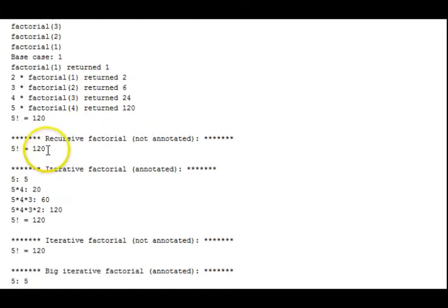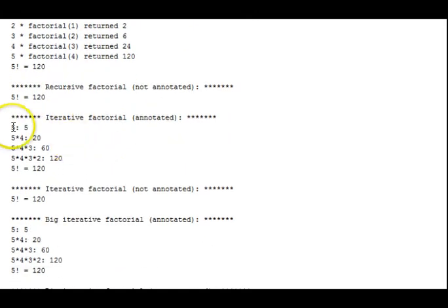Here's the non-annotated result. The iterative result, 5, 5 times 4, 5 times 4 times 3, 5, 4, 3, 2. You can see this is fundamentally easier to understand. It's not as abstract of a concept as the recursive solution. And down here, the big integer iterative, no difference there at this point. Let's go to our next test case, and then we'll look at that output.